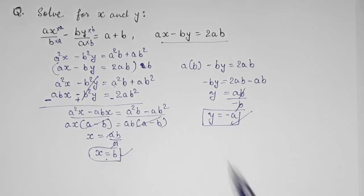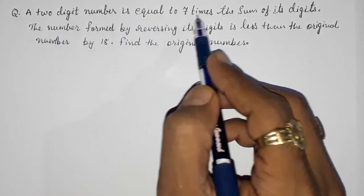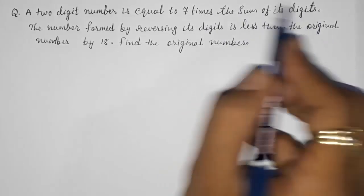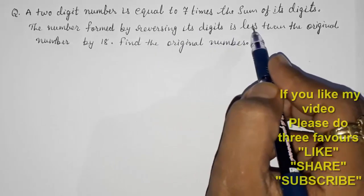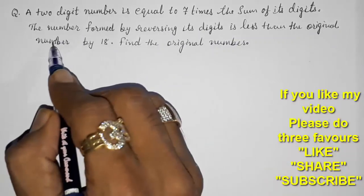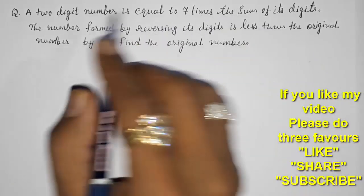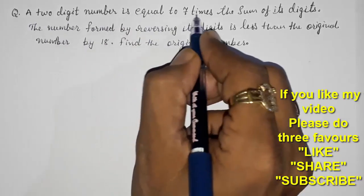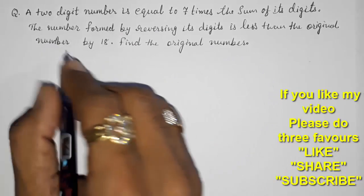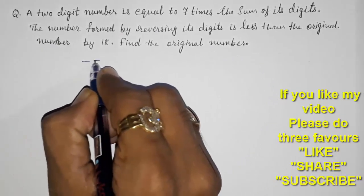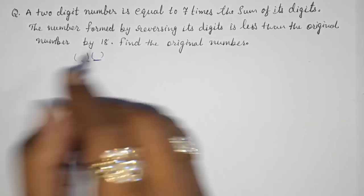Moving to question number 2: A two-digit number is equal to seven times the sum of its digits. The number formed by reversing its digits is less than the original number by 18. Find the original number. Whenever we write a two-digit number, we suppose the unit place digit as y and the tens place digit as x.